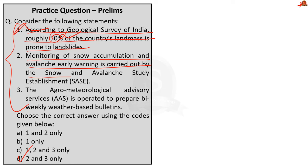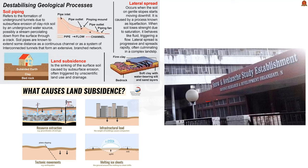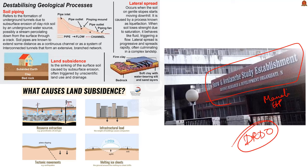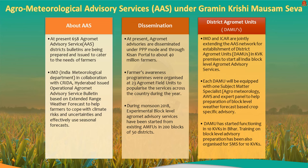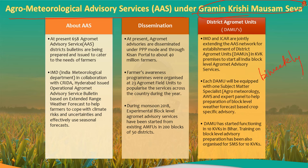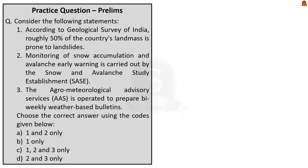The second statement says monitoring of snow accumulation and avalanche early warning systems is carried out by the Snow and Avalanche Study Establishment (SASE) — this is correct. SASE is a laboratory located in Manali, Himachal Pradesh, under the Defence Research and Development Organisation (DRDO). The third statement says the Agro-Meteorological Advisory Services (AAS) operates to prepare bi-weekly weather-based bulletins — this is also correct. The Gramin Krishi Mausam Seva (GKMS) is implemented by the Indian Meteorological Department in collaboration with state agricultural universities or ICAR. The correct answer is Option D — 2 and 3 only.